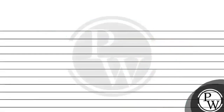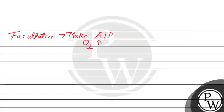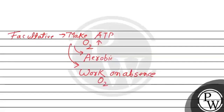Now we will differentiate between facultative anaerobic and obligate anaerobic. Facultative anaerobic bacteria can work in the absence of oxygen, but also in the presence of oxygen. They make ATP in the presence of oxygen and are mostly aerobic. So they can work in the absence of oxygen also — they can switch between presence of oxygen and absence of oxygen.